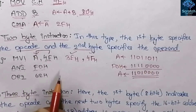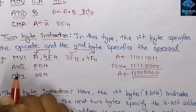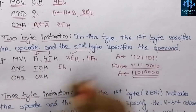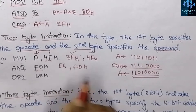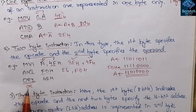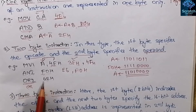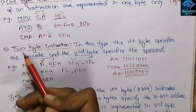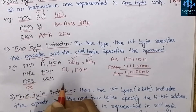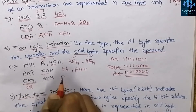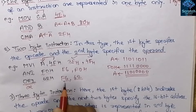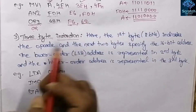ANI is a two byte instruction because the first byte is the hex code of ANI instruction which is E6 hex, and the second byte is the operand — the data F0 hex provided. The next instruction is ORI 62 hex, used to perform logical OR between the content of the accumulator and data 62 hex. It is two byte because the first byte is the hex code of ORI which is F6 hex, and the second byte is the operand 62 hex.